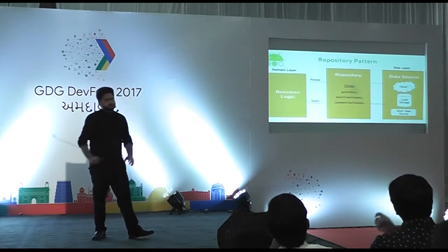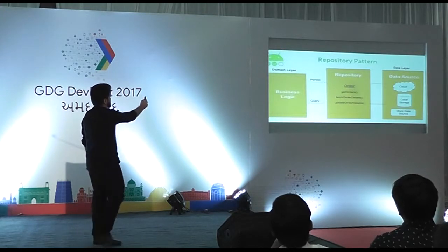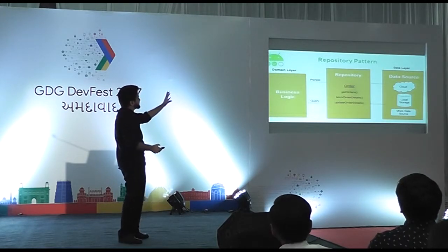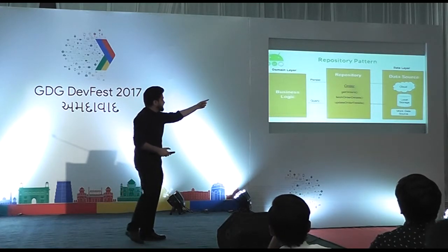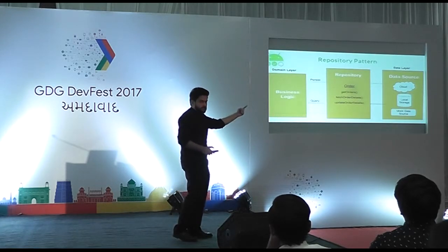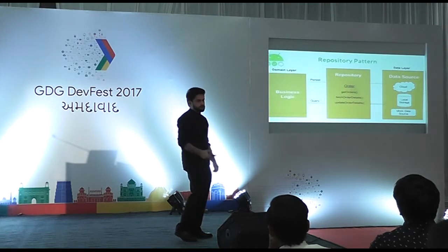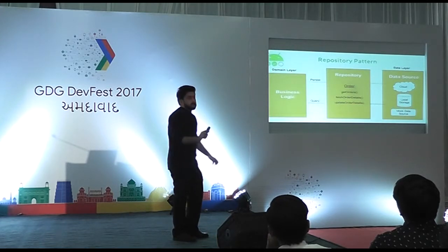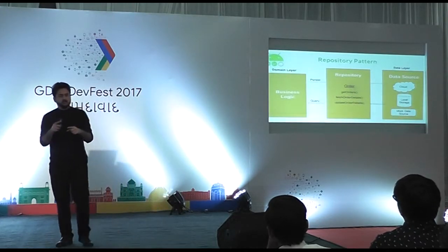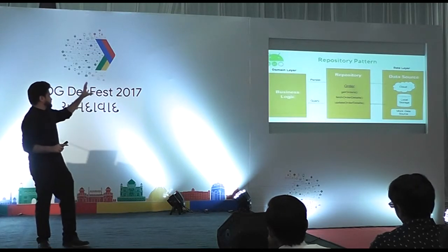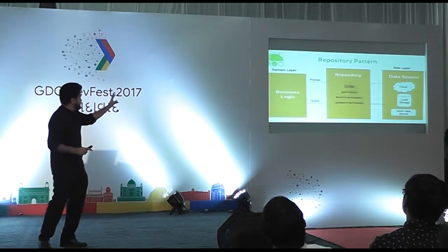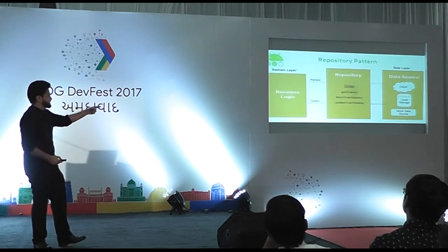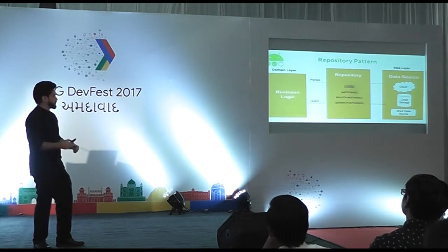The first tool is the repository pattern. You have your domain layer with the business logic, your data layer from where you fetch data, and in between those two you have a repository. The repository's job is to get data from different sources — the cloud, local storage, or a mock data source for testing. The repository ensures the contract by which you fetch data remains the same, making it easier to interchange the data source while keeping the contract consistent.